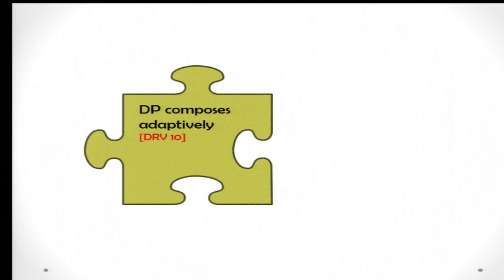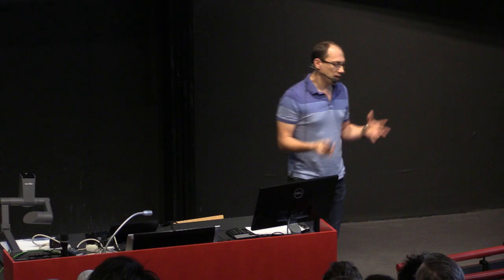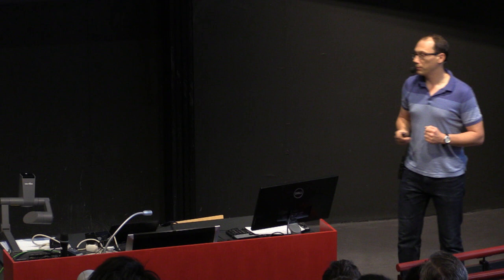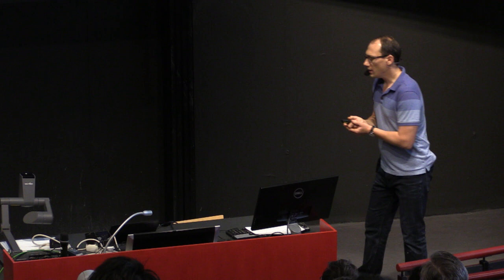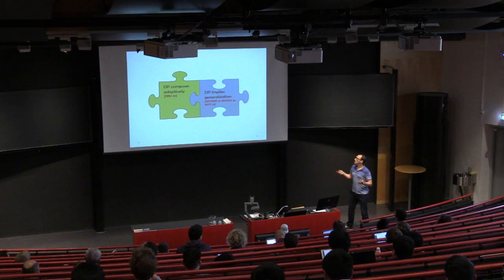The second property needed is that differential privacy implies generalization, which they proved in prior work. Combining these two pieces, whenever you have an algorithm that answers a query and satisfies differential privacy, you can use it in this adaptive setting. However, differential privacy is still a relatively restrictive notion, and the question is whether there are other notions that potentially relax differential privacy but still have these attractive properties, allowing a richer set of algorithms.